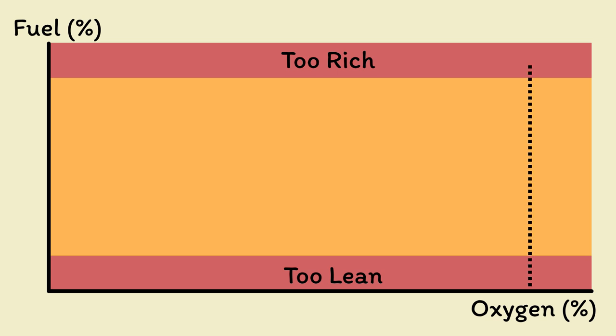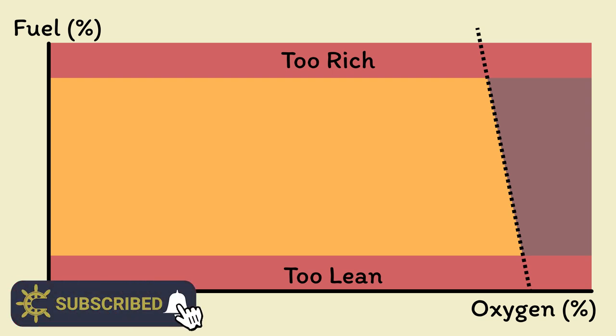Obviously, normal air has around 21% oxygen, so there's no point going above that because we're not pumping extra oxygen in. This line actually slopes a little because the oxygen percentage will naturally decrease when you start mixing in fuel particles.